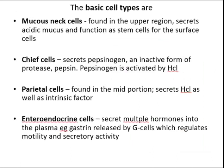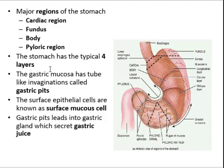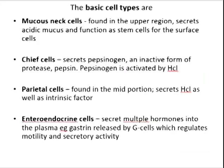There are different basic cell types of the stomach. The stomach contains the typical four layers. The gastric mucosa has tube-like invaginations called gastric pits. The gastric mucosa is covered by surface epithelium cells, also known as surface mucous cells. It also has gastric pits that lead into the gastric glands, which secrete gastric juice.